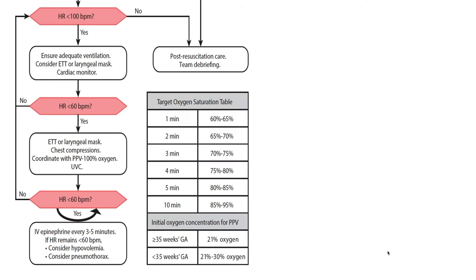After 30 seconds of PPV that ventilates the lungs — as indicated by an increasing heart rate or chest movement — we will check the baby's heart rate response again. If the heart rate is greater than or equal to 100, PPV has been successful. Continue ventilating at 40 to 60 breaths per minute and monitor the baby's chest movement, heart rate, and respiratory effort. Adjust the FiO2 as needed based on pulse oximetry and the target oxygen saturation table. When the heart rate is consistently greater than 100, gradually reduce the rate of PPV. Observe for effective spontaneous respiration and gently stimulate the baby to breathe. PPV may be discontinued when the baby has a heart rate continuously greater than 100 and sustained spontaneous breathing.